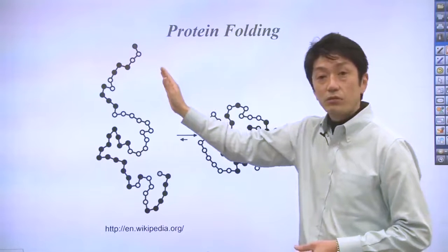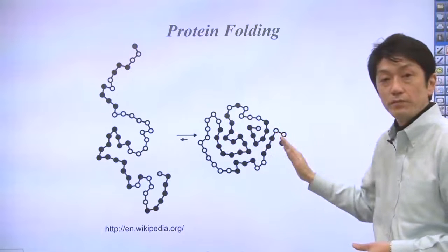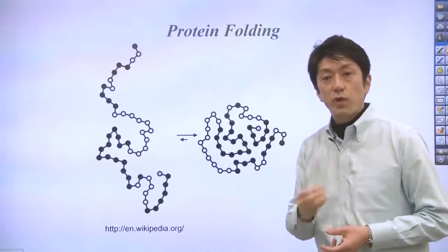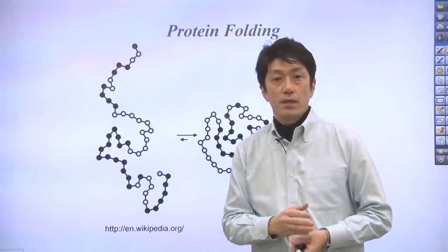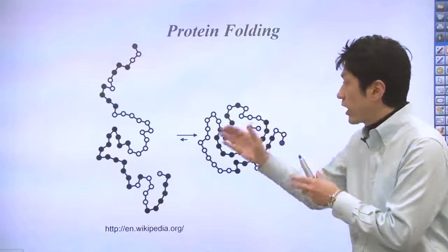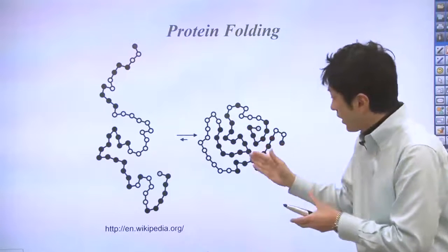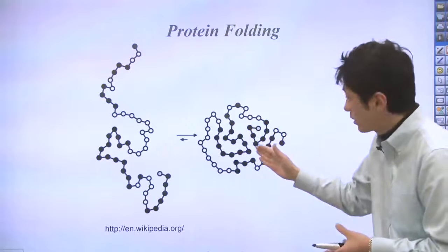They tend to be inside of protein structure in the folded form. This is what I explained as a like-type interaction. Something similar tends to get together, so that's why you can see more hydrophobic amino acids inside the protein structure.